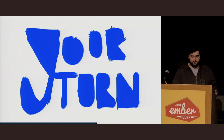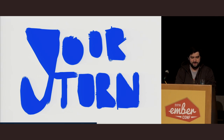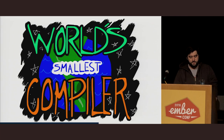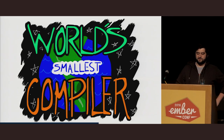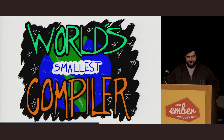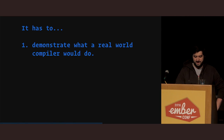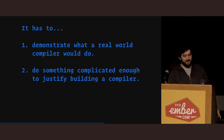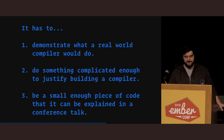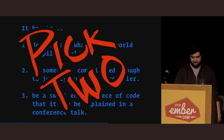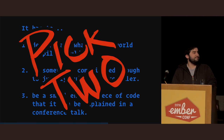So you can all write your own, right? No, of course not. When I was thinking of how to create this talk, I knew I wanted to frame things from a more comfortable perspective, but I also wanted to teach in the same way that I learned — the world's smallest compiler. I just have a couple of requirements: it has to demonstrate what a real-world compiler would do, it has to do something complicated enough to justify building a compiler, and it has to be small enough that it could be explained in a conference talk. It turns out I was a little bit overconfident. And it's really freaking difficult. I tried all sorts of things, and eventually I just gave up. There was no way I was going to write a compiler for this talk — it just wasn't a practical idea.